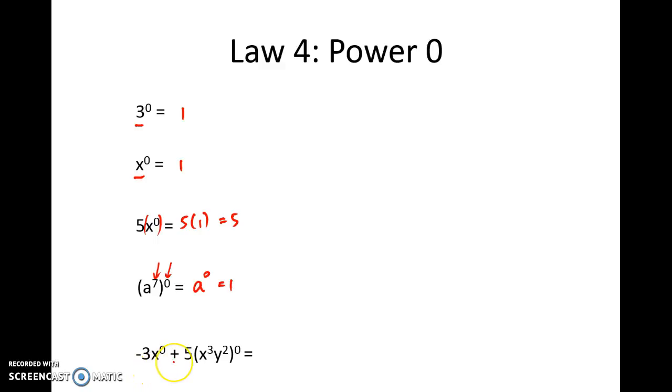This is a bit more complex our final problem. So let's consider it in two parts. Initially we've got negative 3 and we're timesing that by x to the power 0. Now x to the power 0 is 1. So I'll just replace x to the power 0 with the 1.